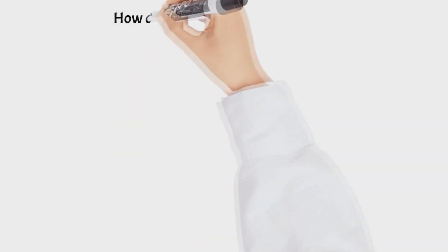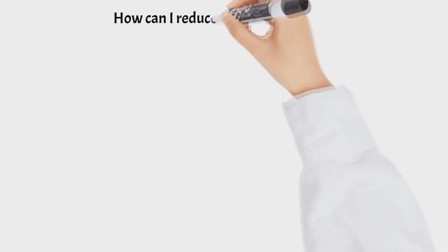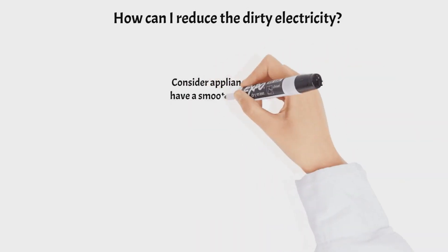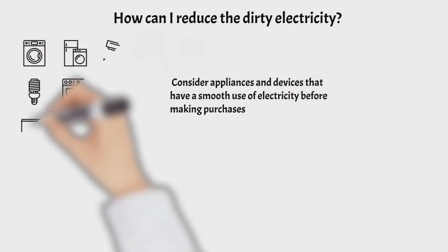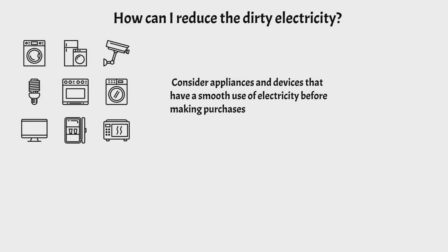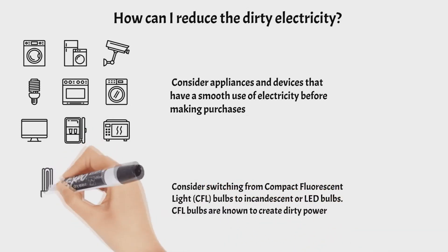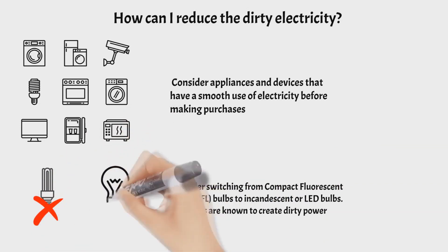The important question is: how can we reduce dirty electricity? We can reduce it by considering appliances and devices that have a smooth use of electricity before buying them. Second, we have to switch from compact fluorescent lamps to incandescent or LED bulbs, because compact fluorescent lamps are known to be a source of dirty electricity.